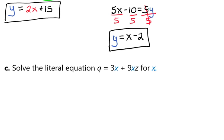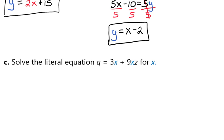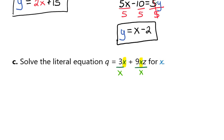So this time, we're going to solve the literal equation q equals 3x plus 9xz for x. So we want to get the x by itself. As we look at this, we can see that we have two terms. Here's a term, and here's a term, and each of them have an x in that term. So we can factor out the x. So we're going to factor out or pull it out. So now we're going to have q equals, remember we're pulling out the x, and we're left with inside a 3 plus a 9z.